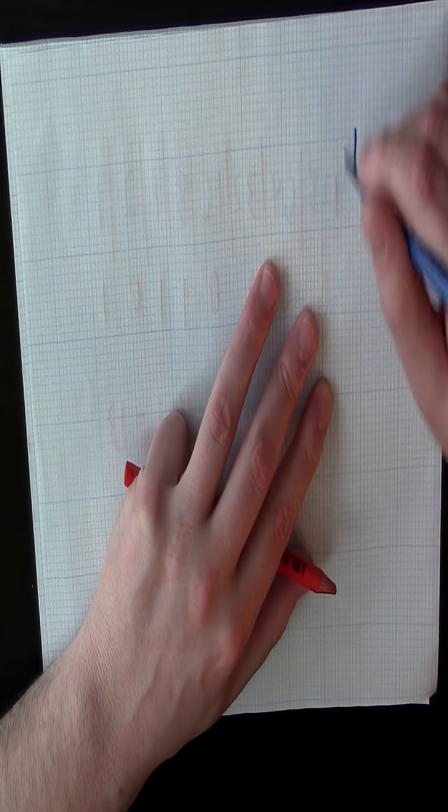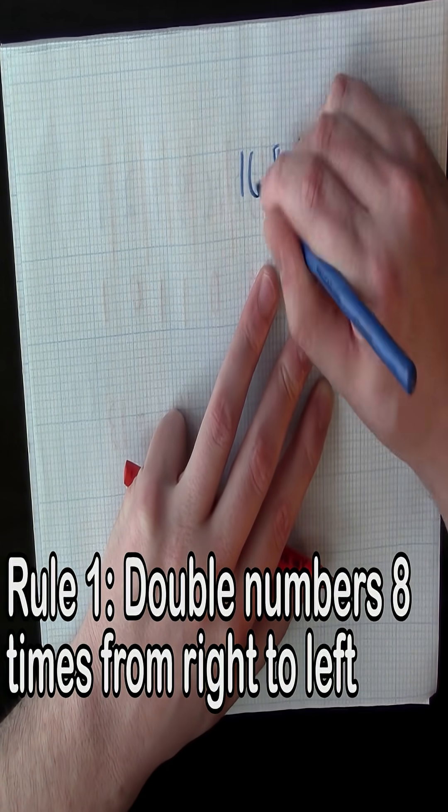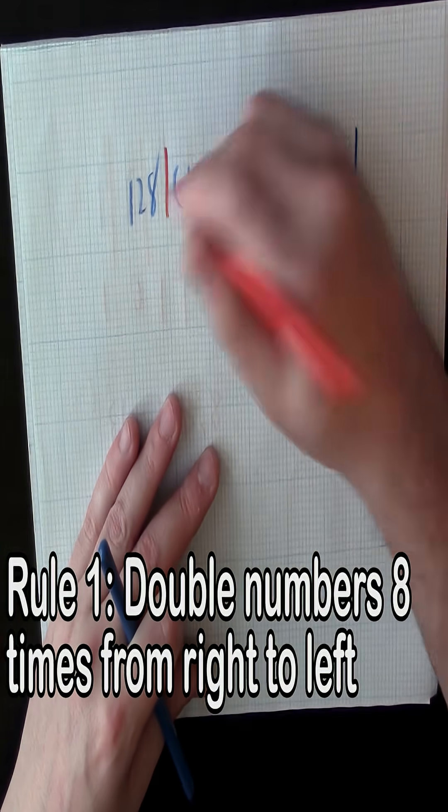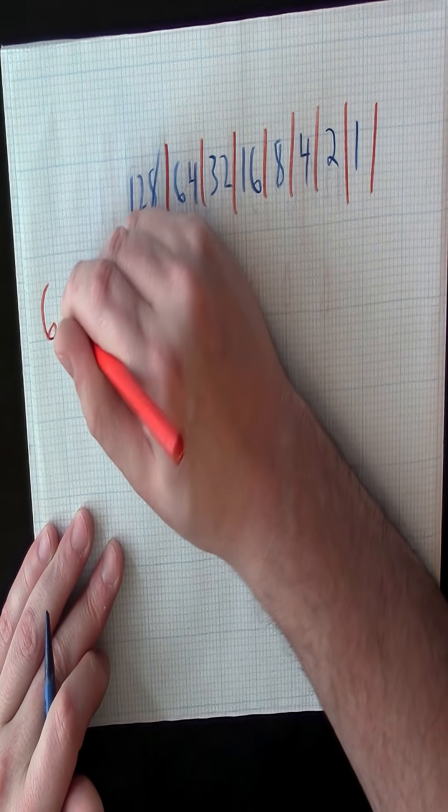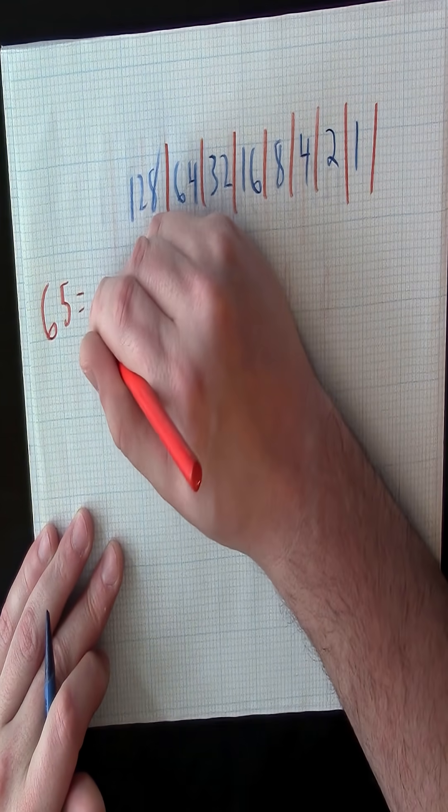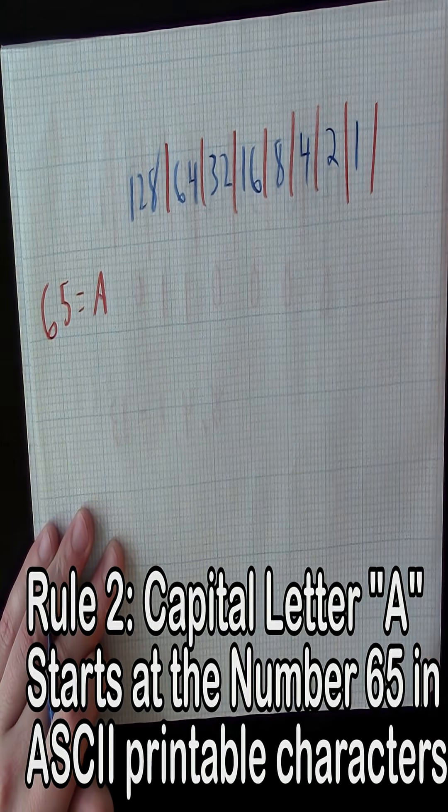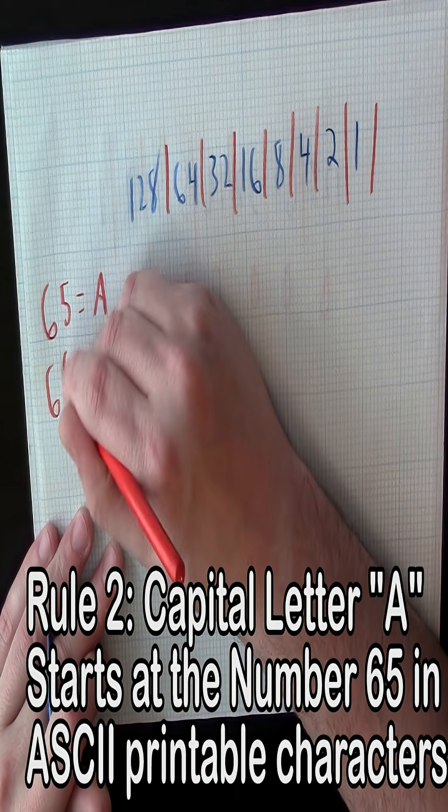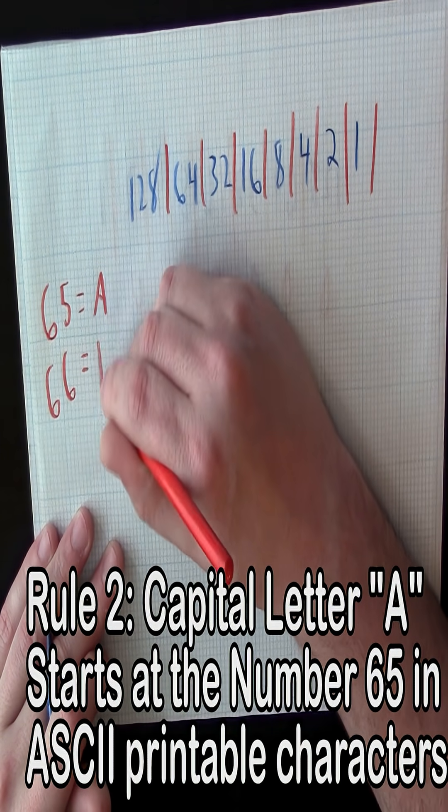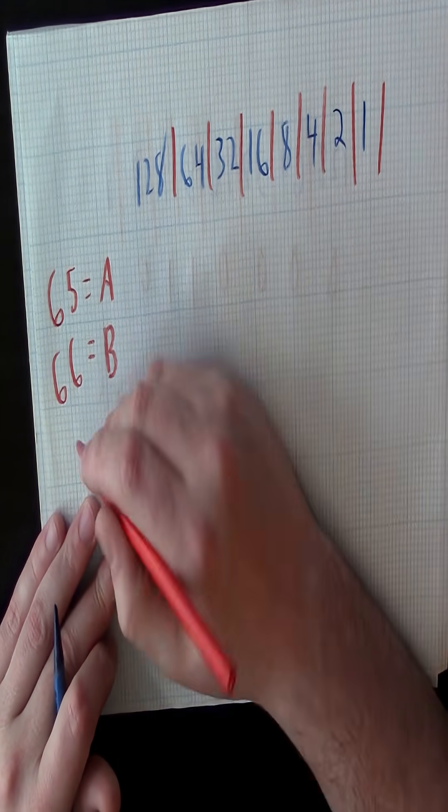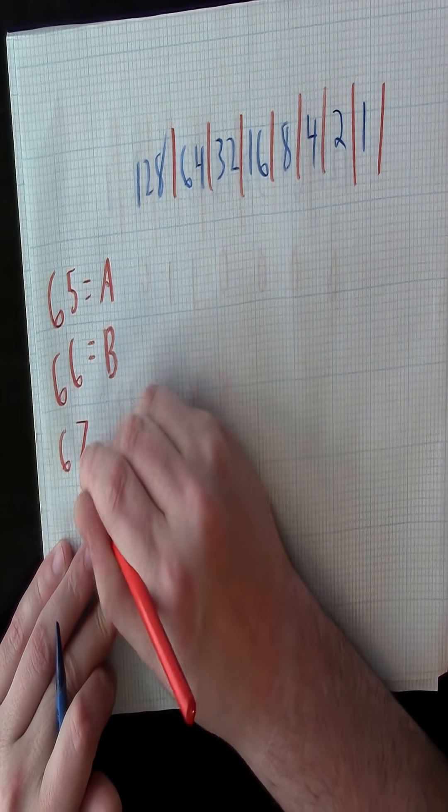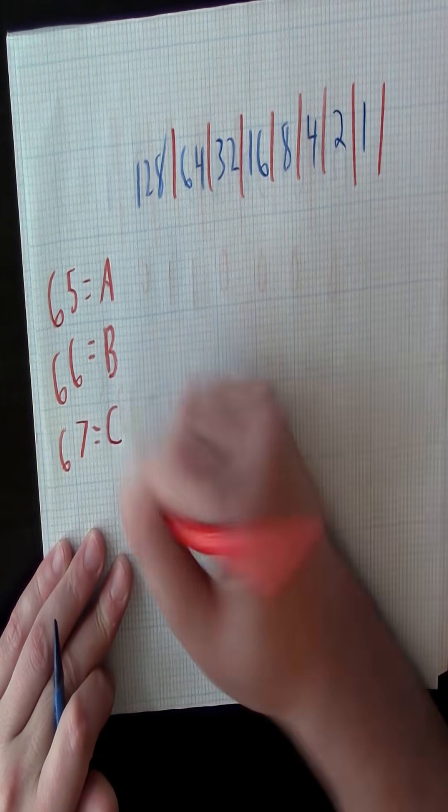So we have our first rule and we have our second rule. 65 equals A. Well, 66 equals B. Can you guess what 67 is? That's right, 67 equals C.